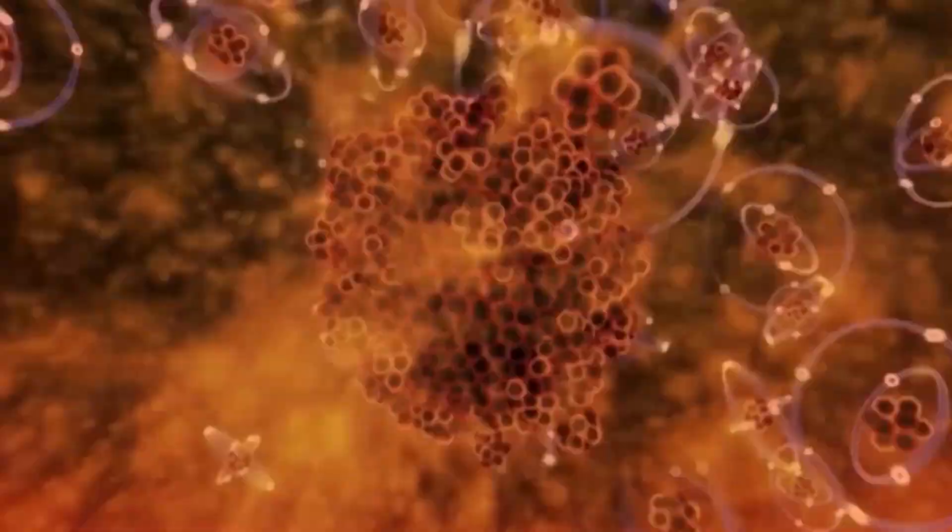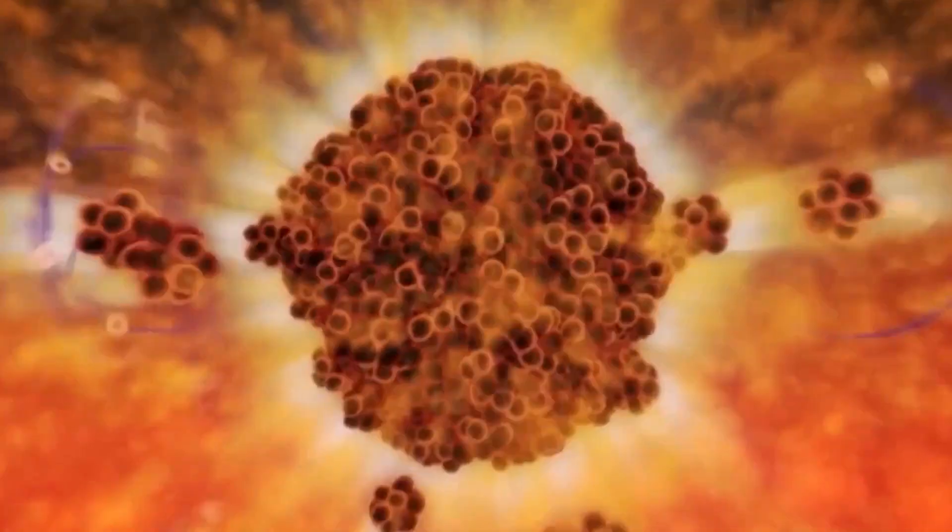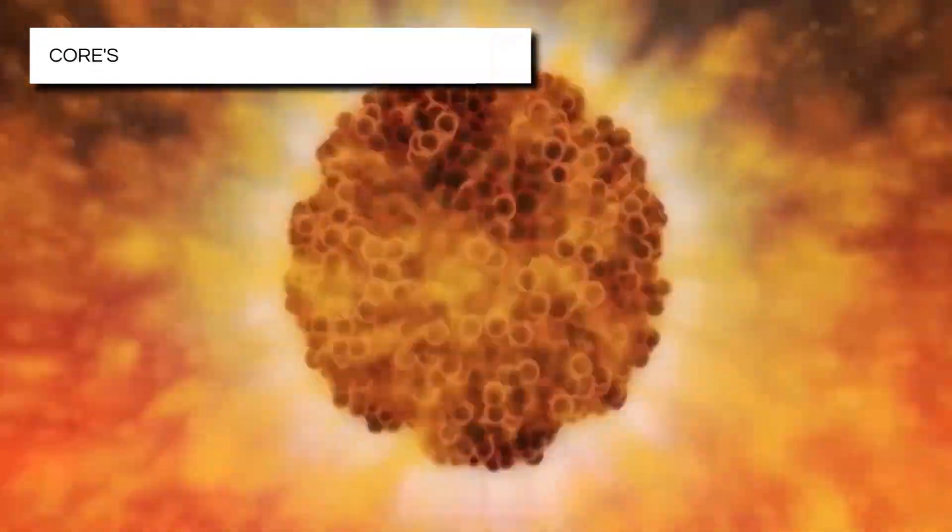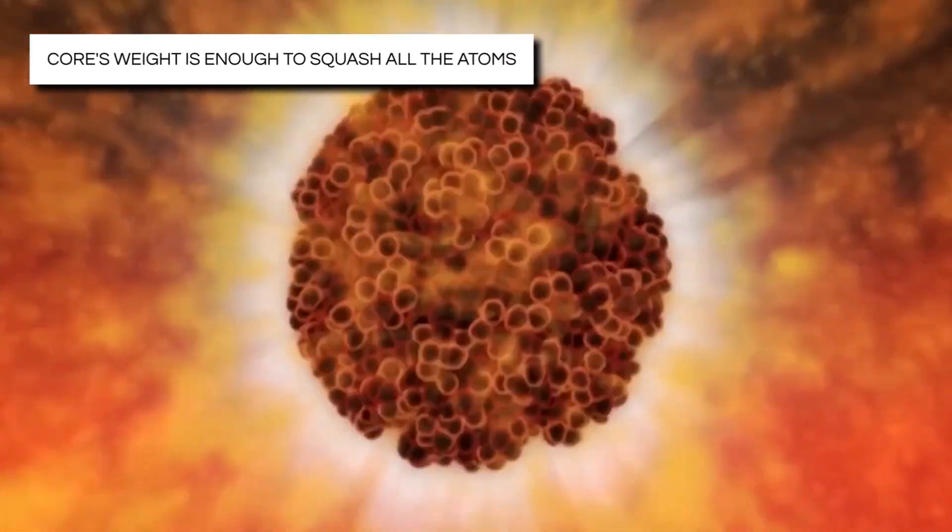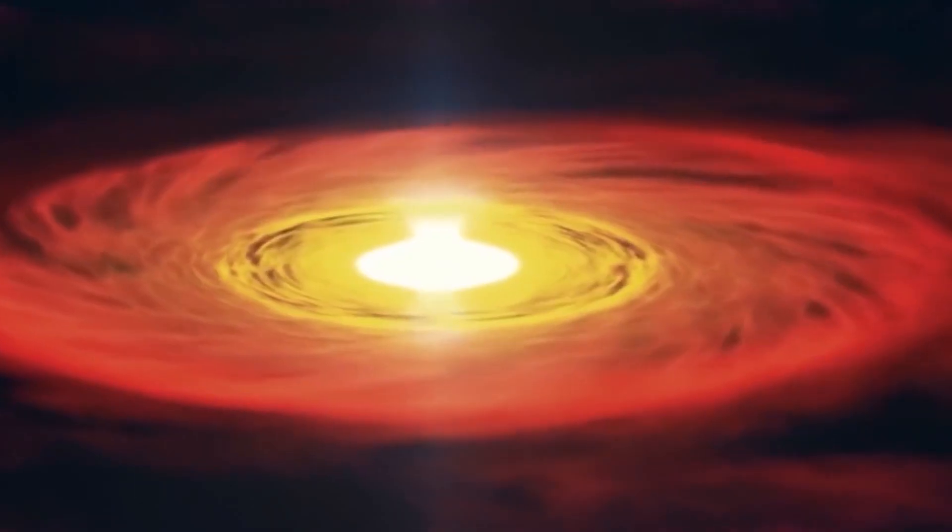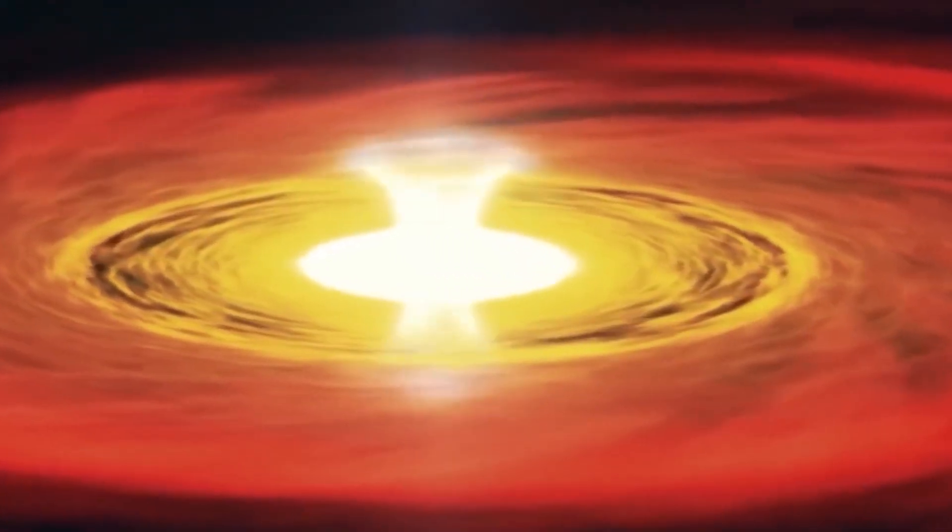But for stars even more massive, the story takes a darker turn. The core's weight is enough to squash all the atoms in it down to their nuclei, forming a black hole. This black hole is gravity taken to the extreme, with its mass packed into a point and hidden within an event horizon, the point of no return.